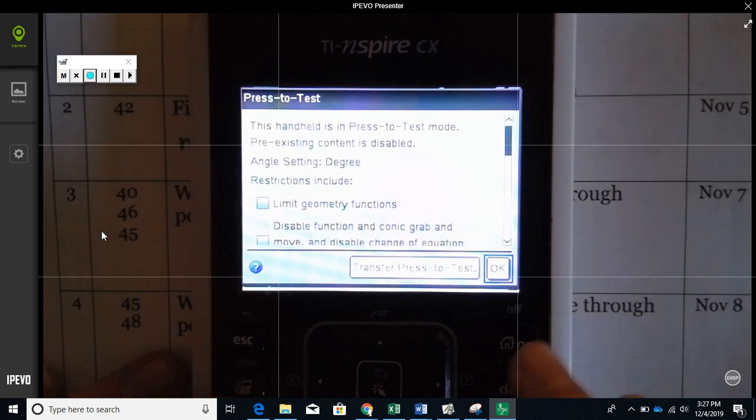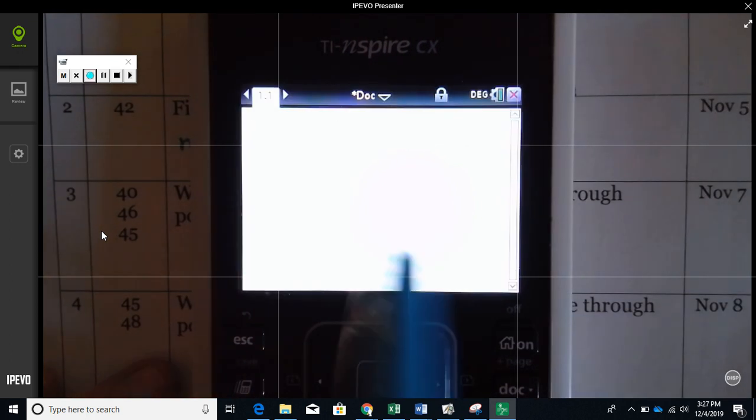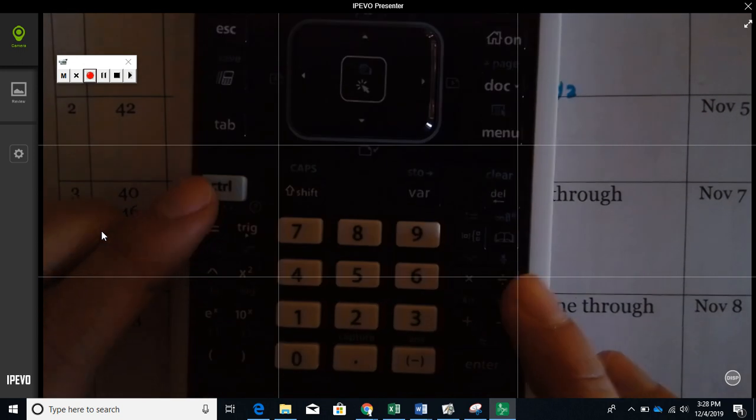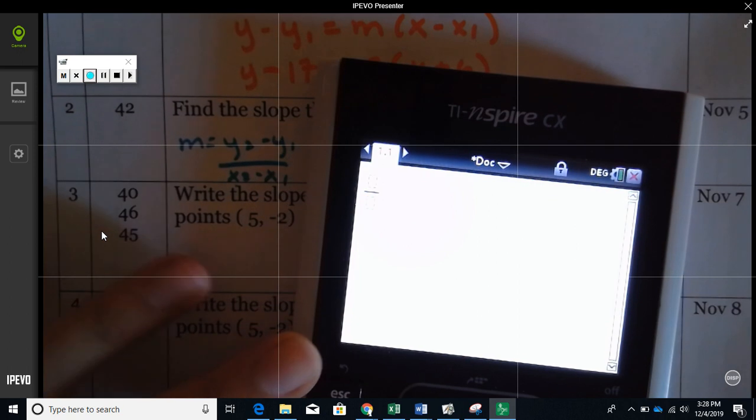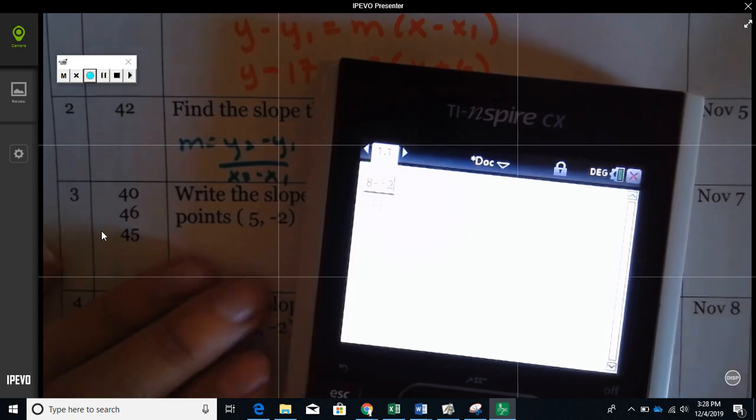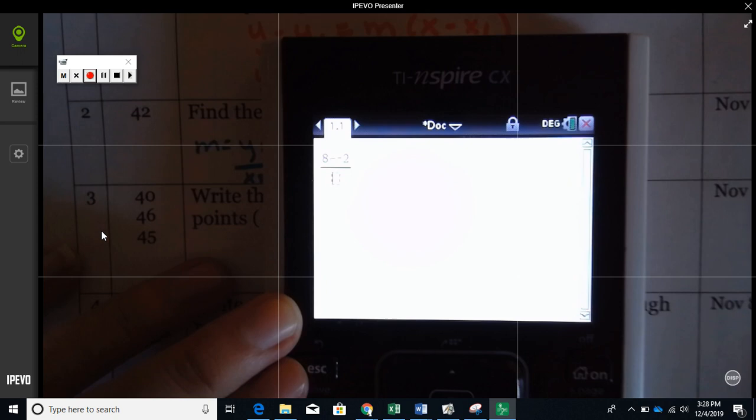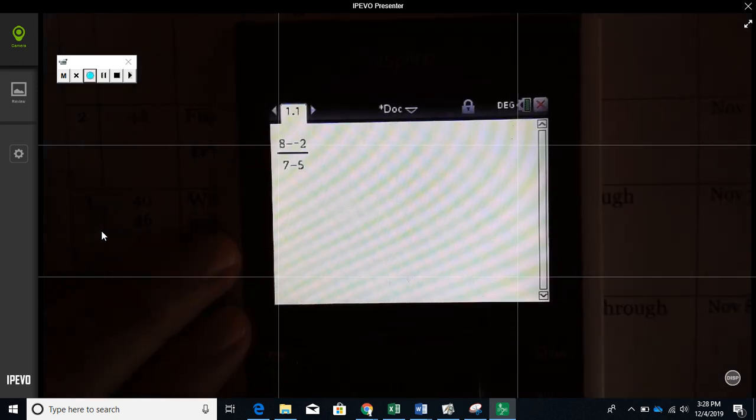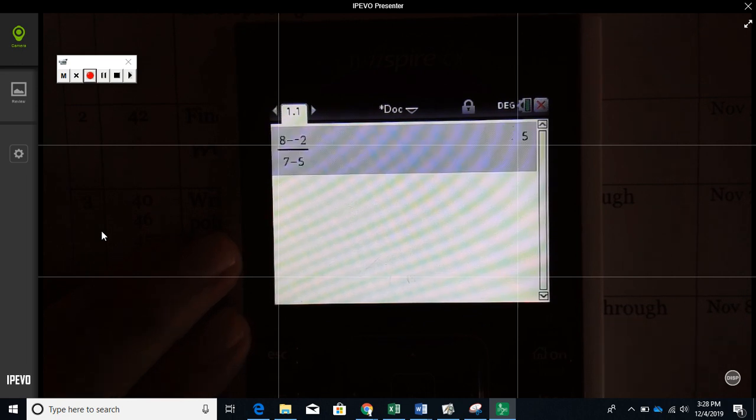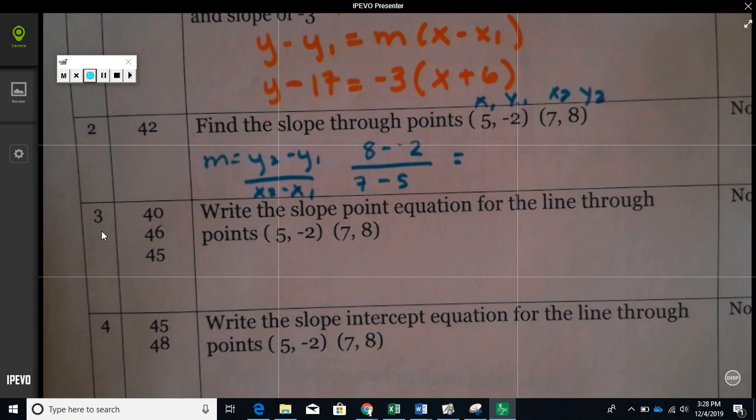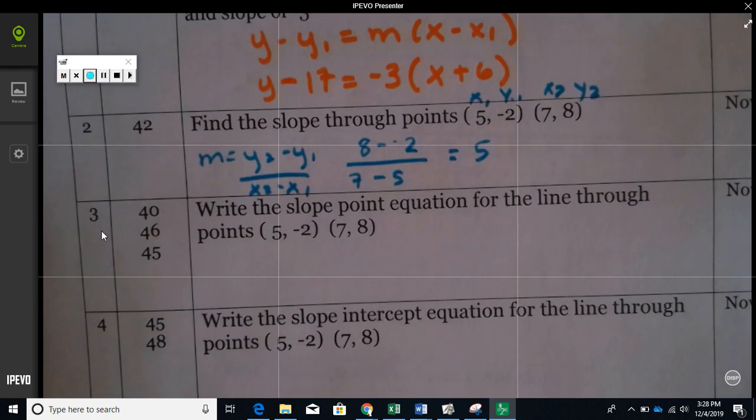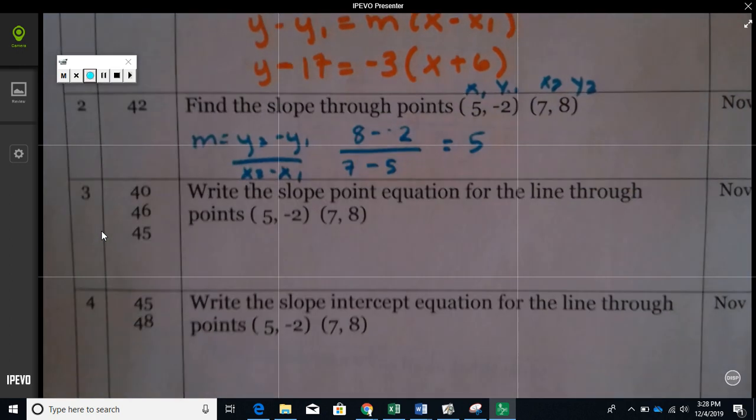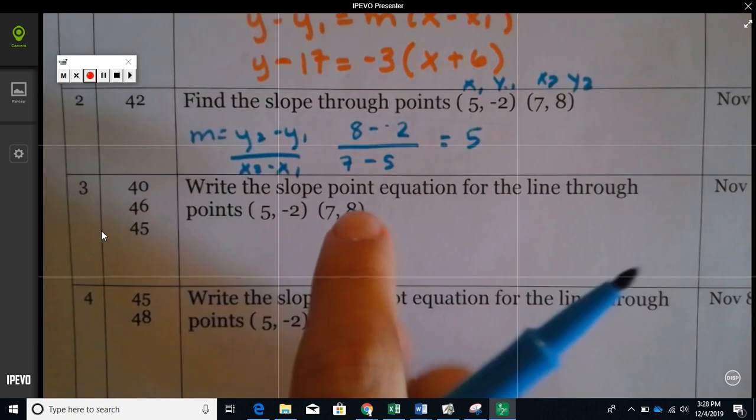On the calculator I press control divide so I get my fraction. It was 8 minus negative 2 over 7 minus 5. That's what you should have in the calculator, and this is what you should get. That equals 5. So then we need this because we're going to need it right here. See how it's the same points? We need to do slope-point equation.